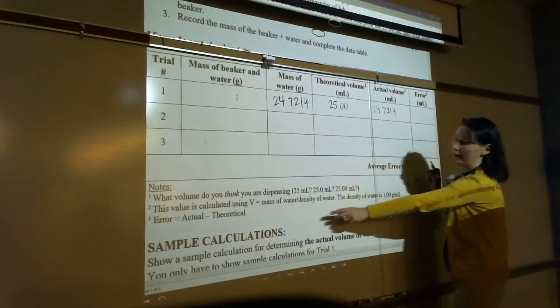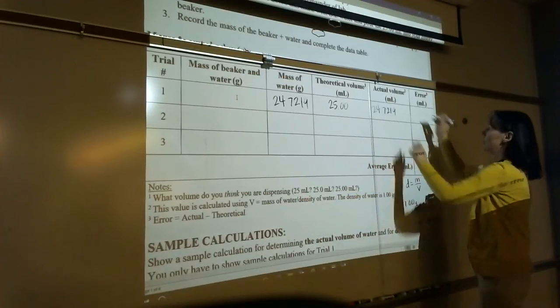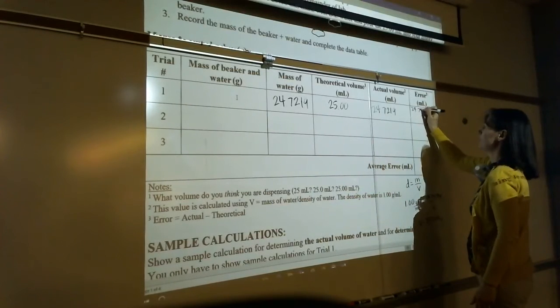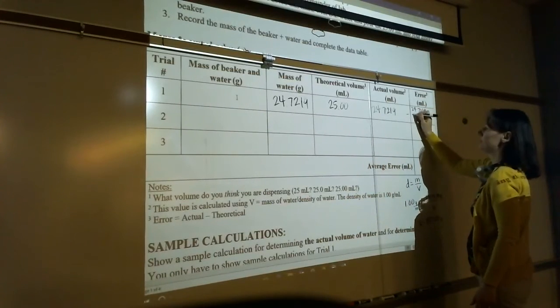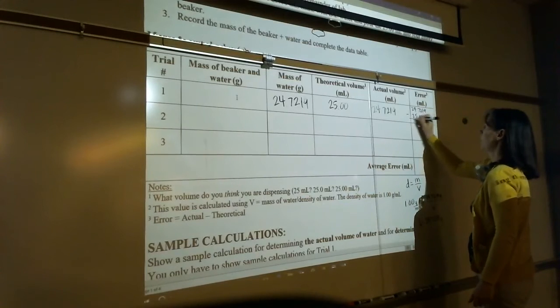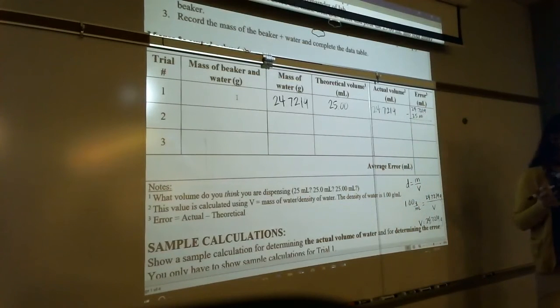It would just be the difference between these. And I've got it all written out right here, right? Actual minus theoretical. So it would be 24.7219 minus 25.00. Whatever that comes out to be, that would be your error.